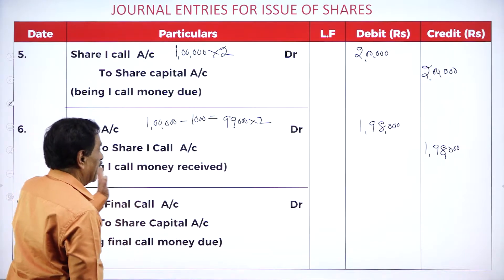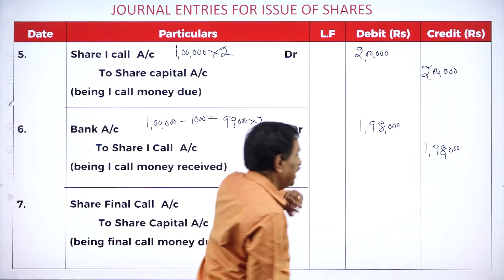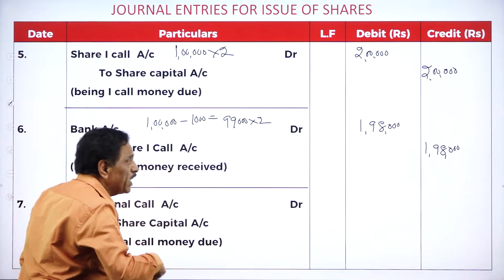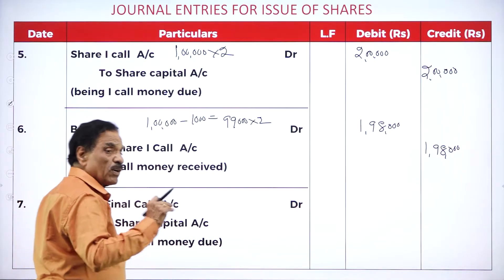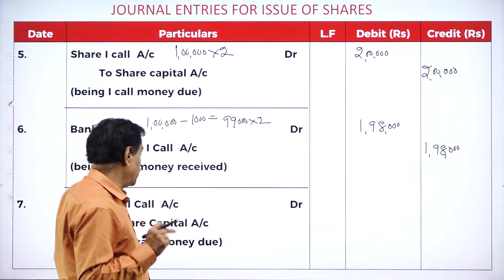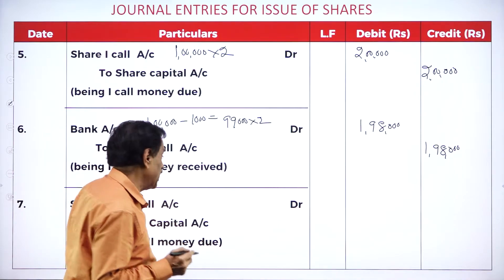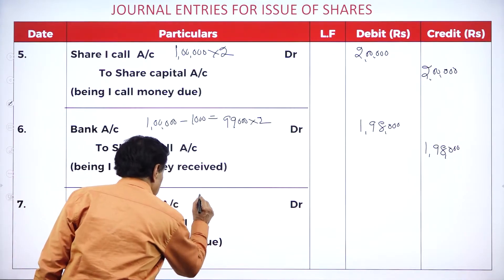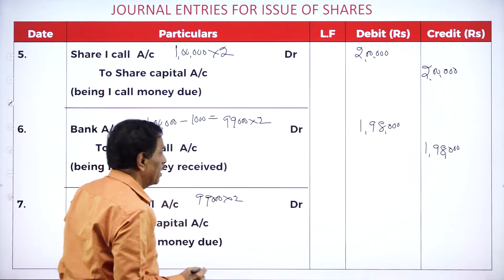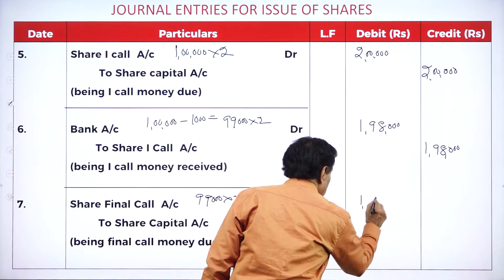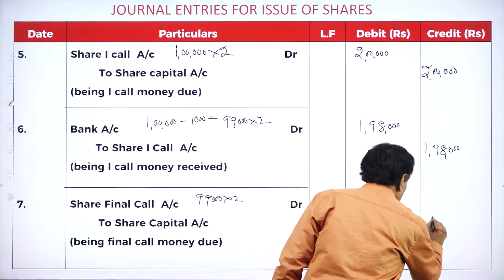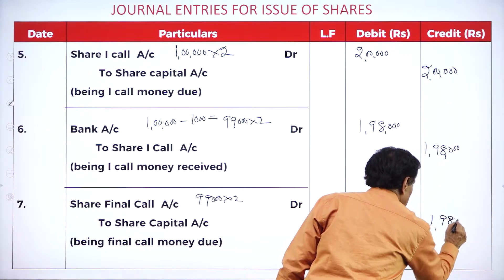Due entry for final call: while making the final call, 1,000 shares have already been forfeited, so we call only for the remaining 99,000 shares. Share final call account debit — 99,000 into 2 = 1 lakh 98,000 — to share capital account 1 lakh 98,000.